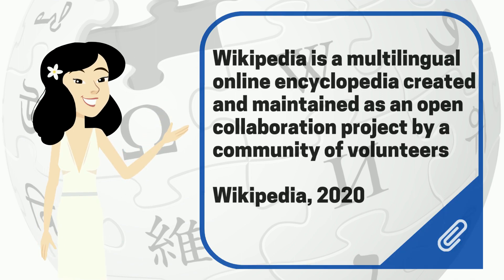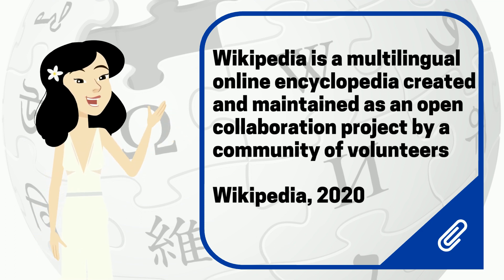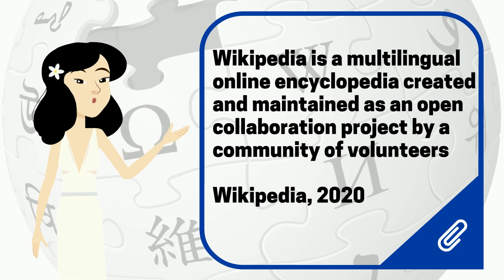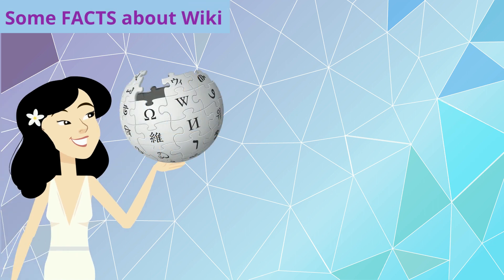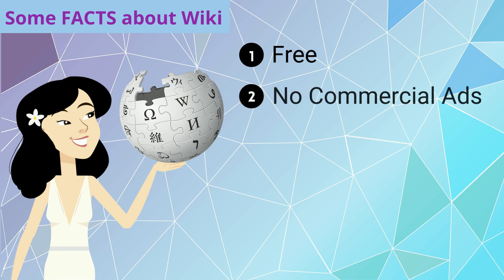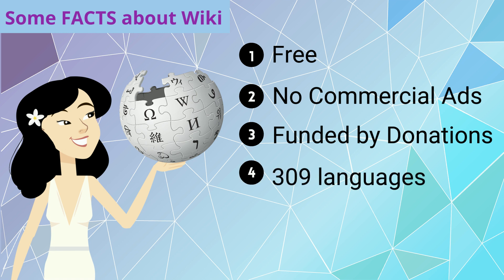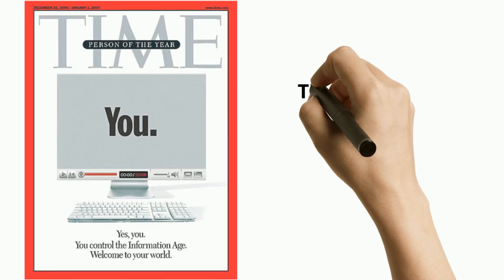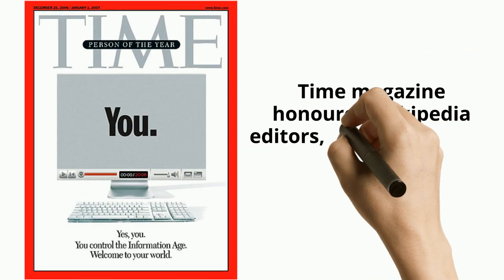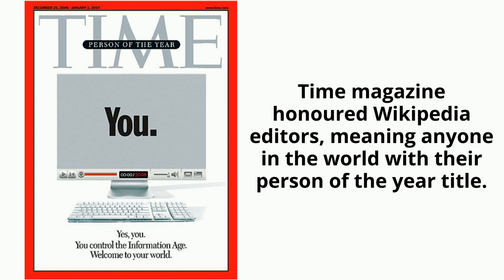According to the Wikipedia website, Wikipedia is a multilingual online encyclopedia created and maintained as an open collaboration project by a community of volunteers. It is free, there are no commercial ads, and Wikipedia is funded by donations. Wikipedia users are all over the world and pages are in 309 languages — it is one of the most popular websites in the world. In 2006, Time magazine stated that the open door policy of allowing anyone to edit had made Wikipedia the biggest and possibly the best encyclopedia in the world.